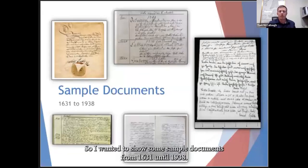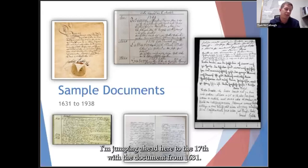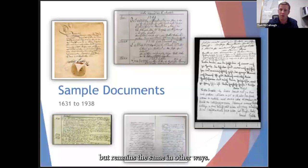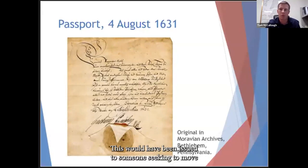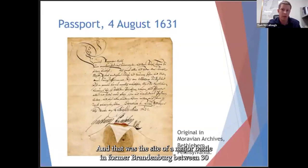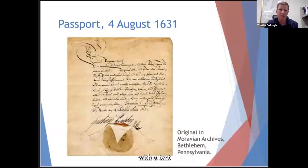I wanted to show some sample documents from 1631 until 1938, to see how the script changes over time but also remains consistent. This first item is a blank passport signed by Swedish King Gustavus Adolphus during the Thirty Years' War. It would have been issued to someone seeking to move freely through the vicinity of Verben — the site of a major battle in former Brandenburg between 30-plus thousand troops, just a few days after the passport was issued, around August 7th.